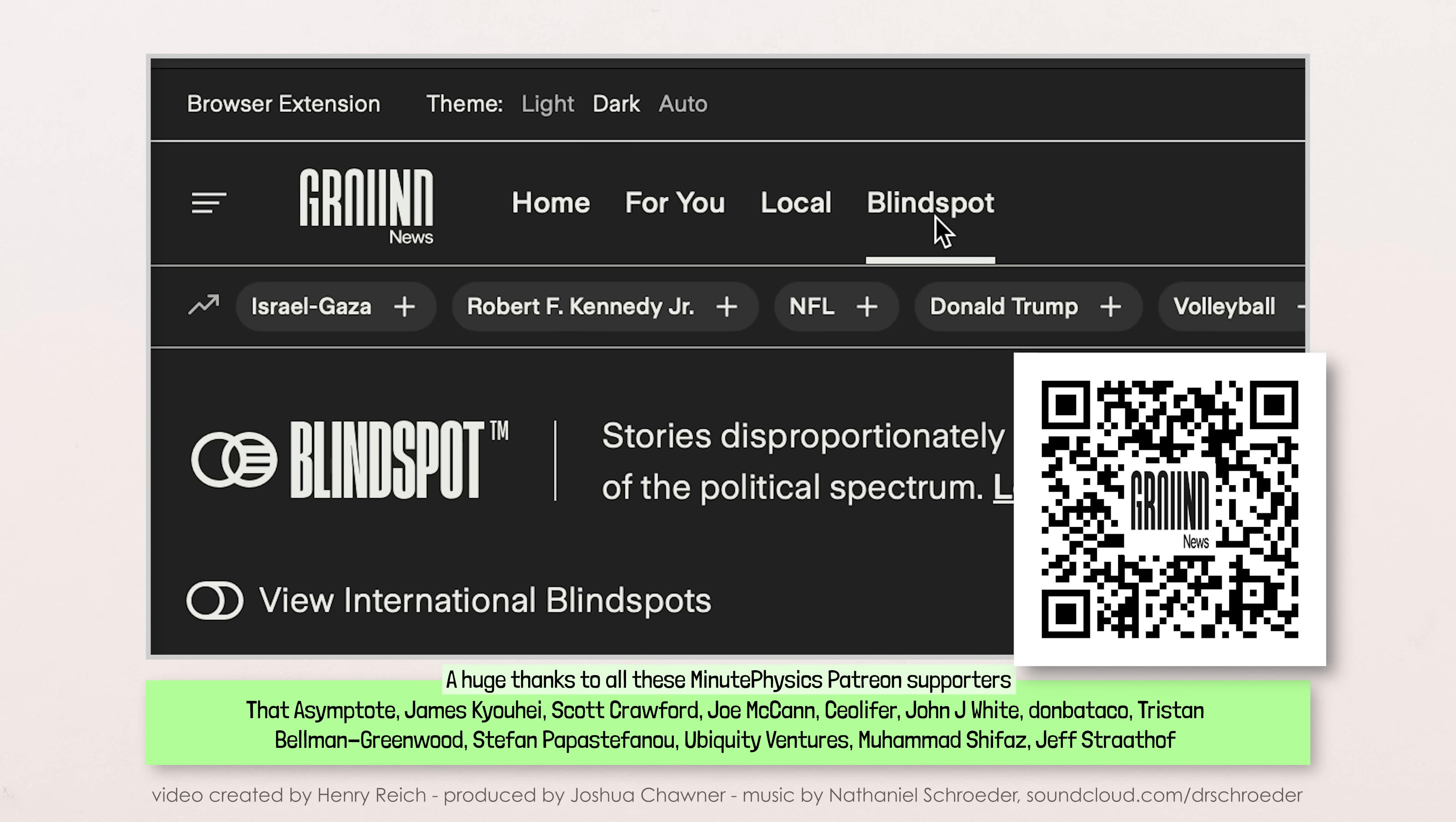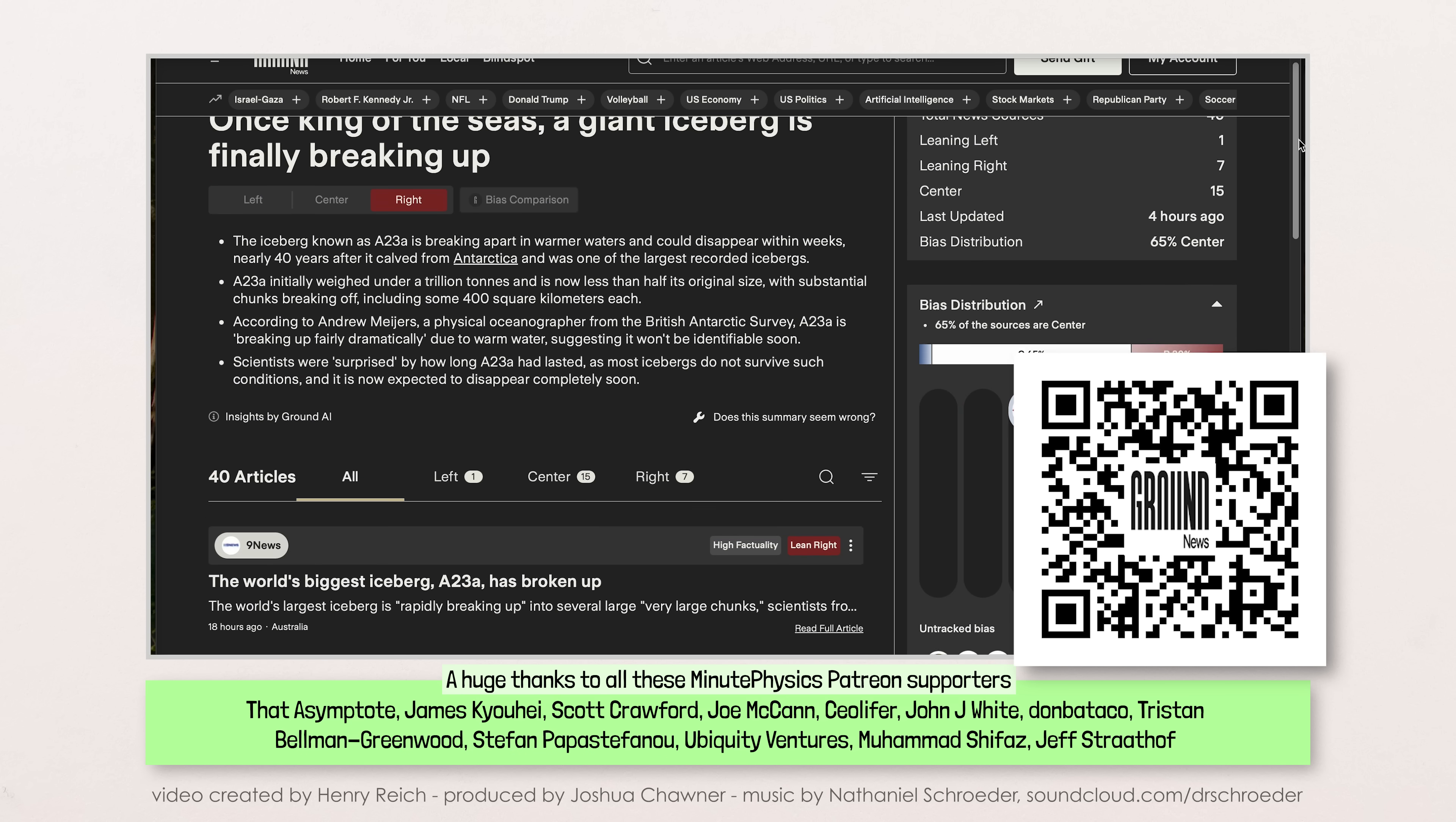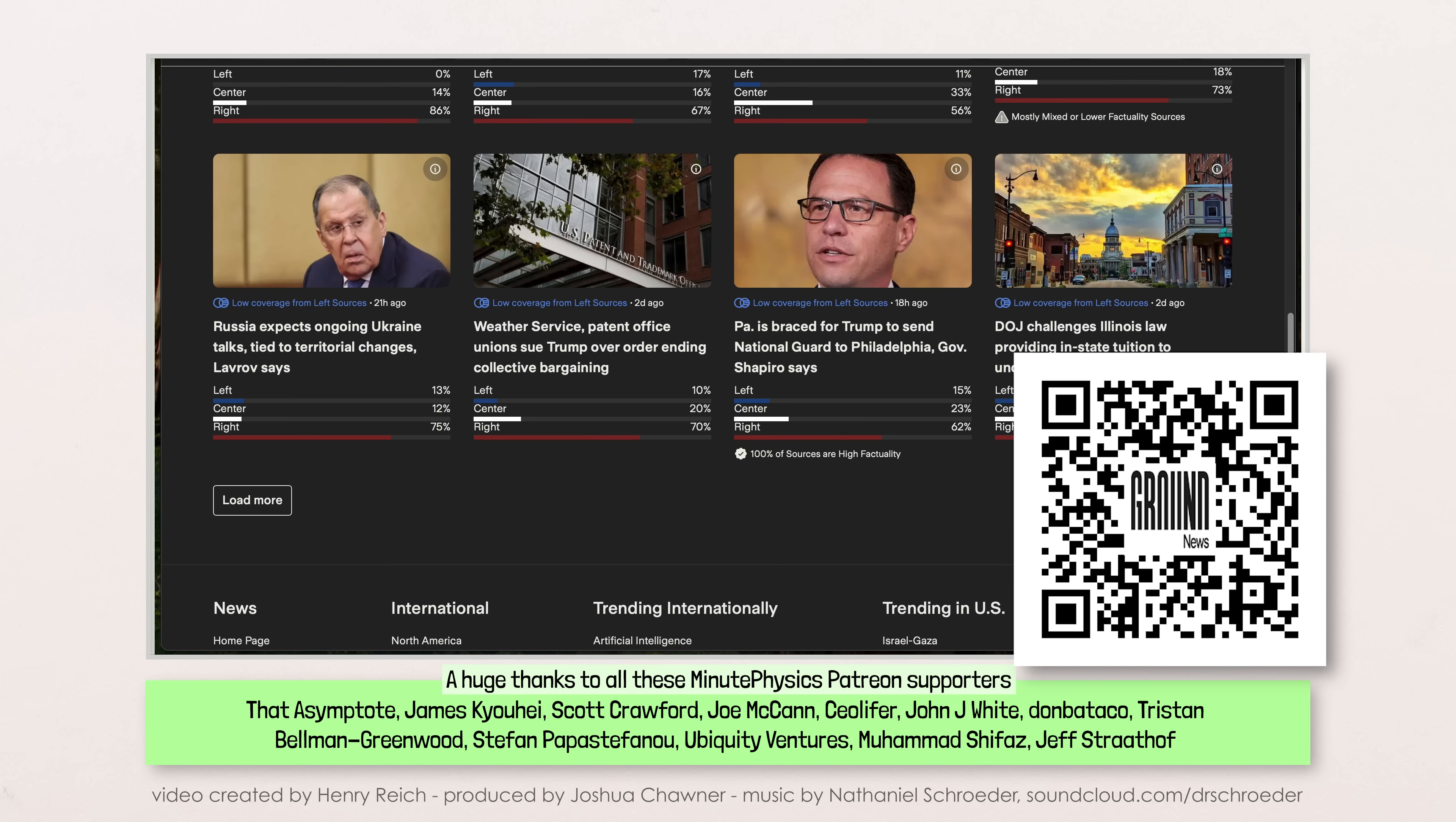Ground News' Blind Spot feature also highlights what news is or isn't being reported across different news sources, like how this recent article about a large iceberg off Antarctica isn't being covered much by left-leaning US media, perhaps because they're biased against icebergs, or perhaps because they've decided they have other more pressing things to report on.